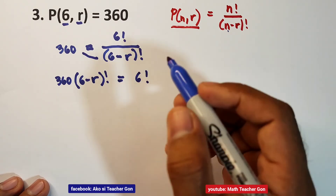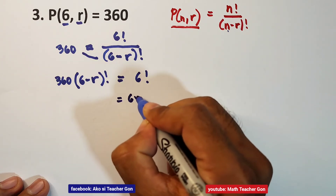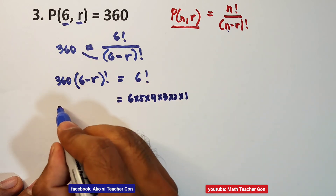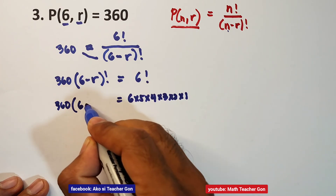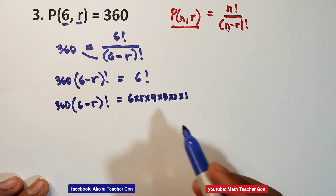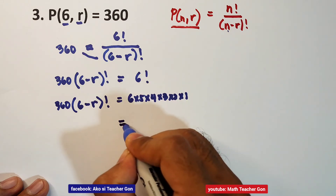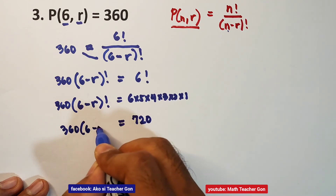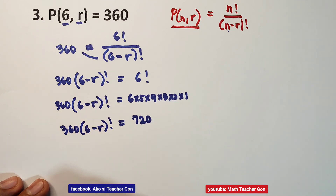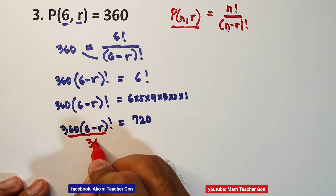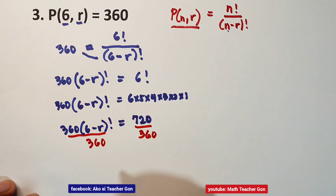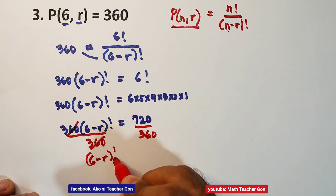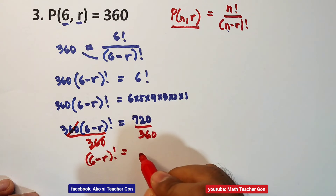Now, 6 factorial equals 6 times 5 times 4 times 3 times 2 times 1. Rewriting, we have 360 times 6 minus r factorial on the left side. Dividing both sides by 360, we cancel, and the remaining equation is 6 minus r factorial equals 720 divided by 360, which equals 2.